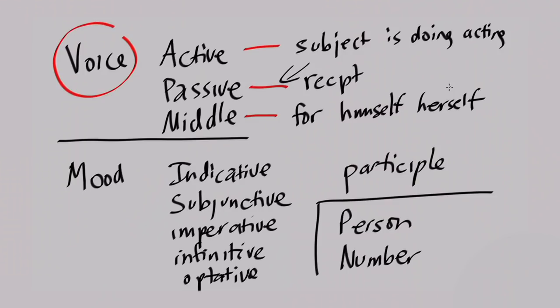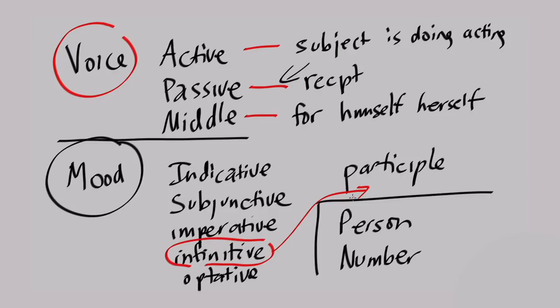Then we have mood. Indicative — we usually call that the factual, a statement of fact, something that is denoting or connoting a fact. Subjunctive — we tend to translate as something that may happen. When we use the subjunctive, we also use something called a modal in English: would, could, may, should. It expresses something that may happen — there's a possibility. There are volumes of books just on the subjunctive alone.